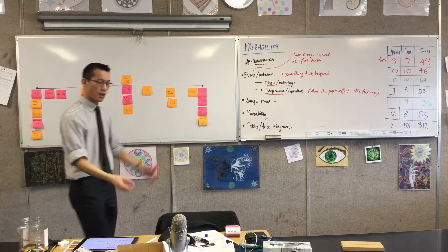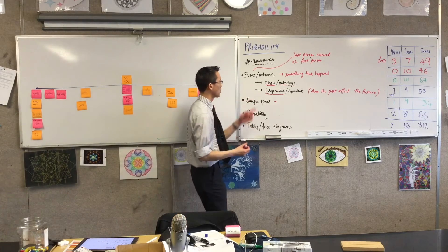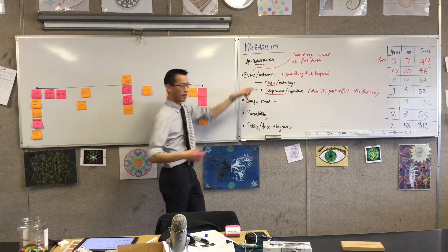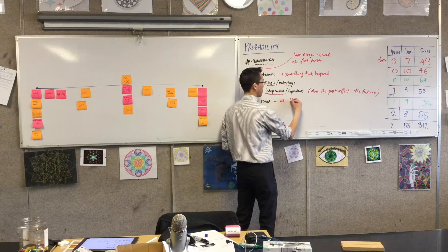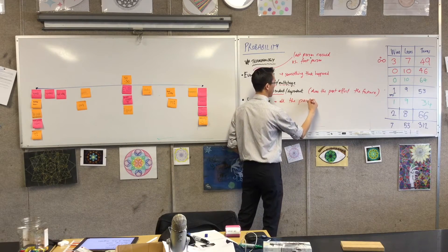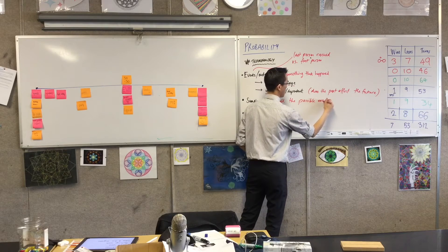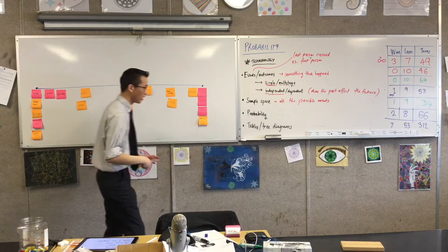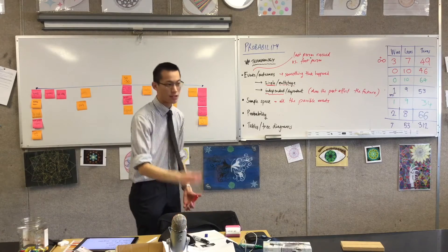The size of the sample space is how many faces there are. The definition of sample space is all the events or outcomes that are possible - all the possible events. If it can happen, it's in the sample space.